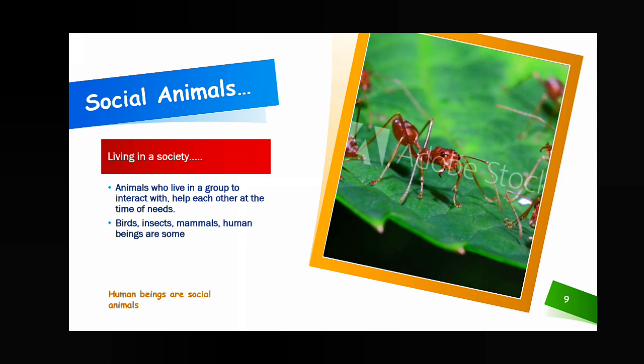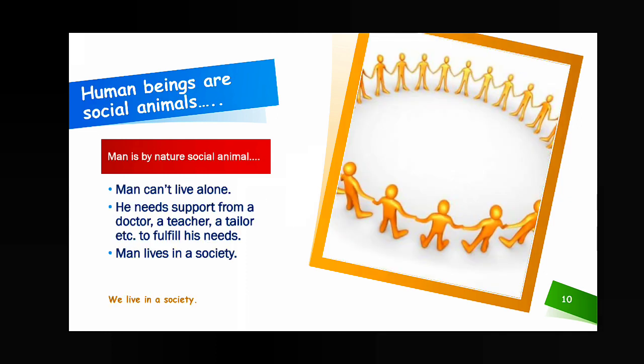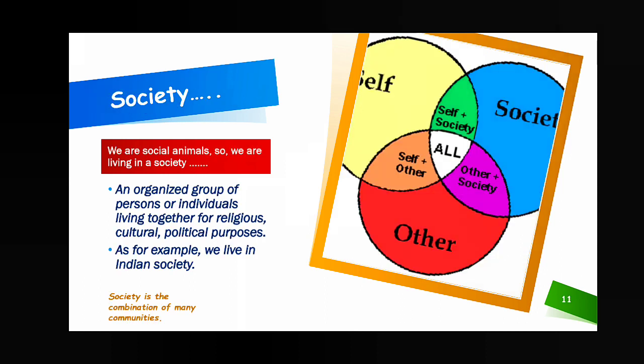Social animals are not only human beings but also ants, birds, insects, and mammals. Human beings are social animals because we cannot live alone — we need support and the help of others, as we cannot fulfill each and every demand by our own activities. That is why we live in a society.